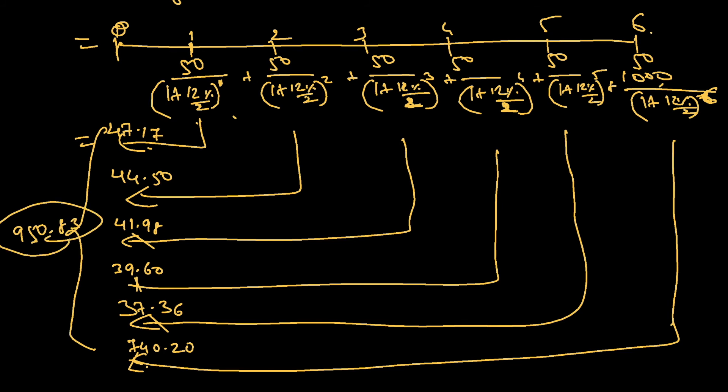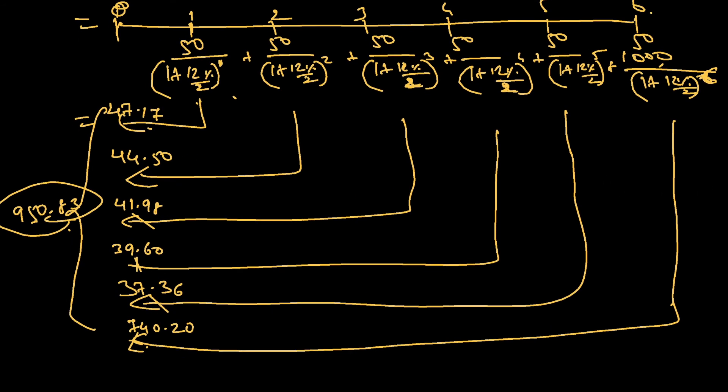So this is the present value of the bond. Now alternatively for CFA sprints, we can do with calculator as well, so that is the shortcut way.